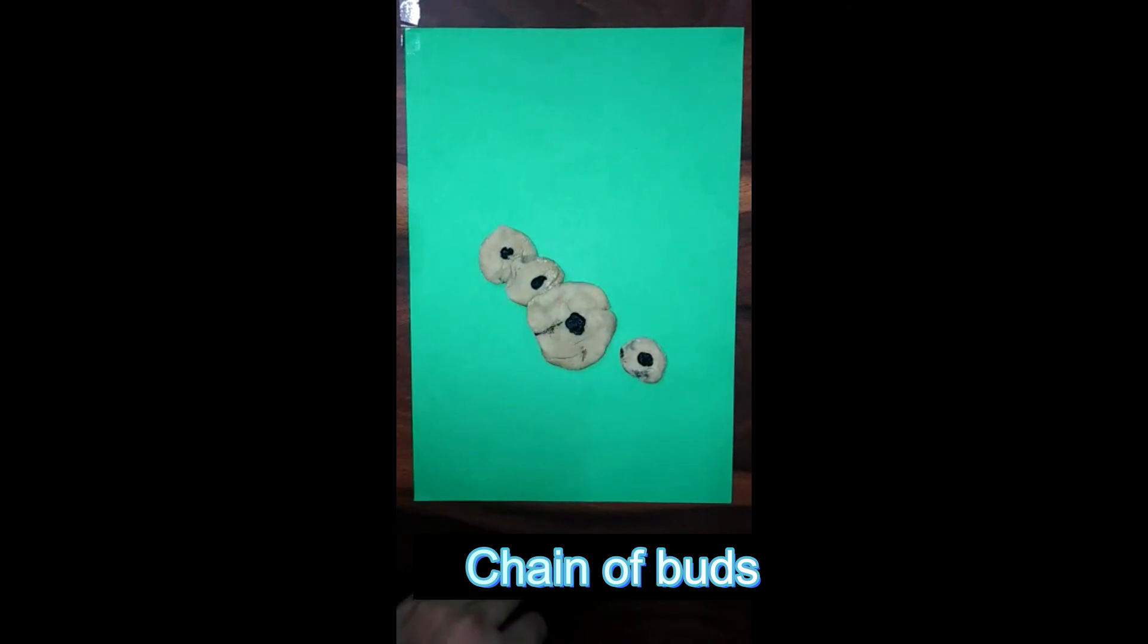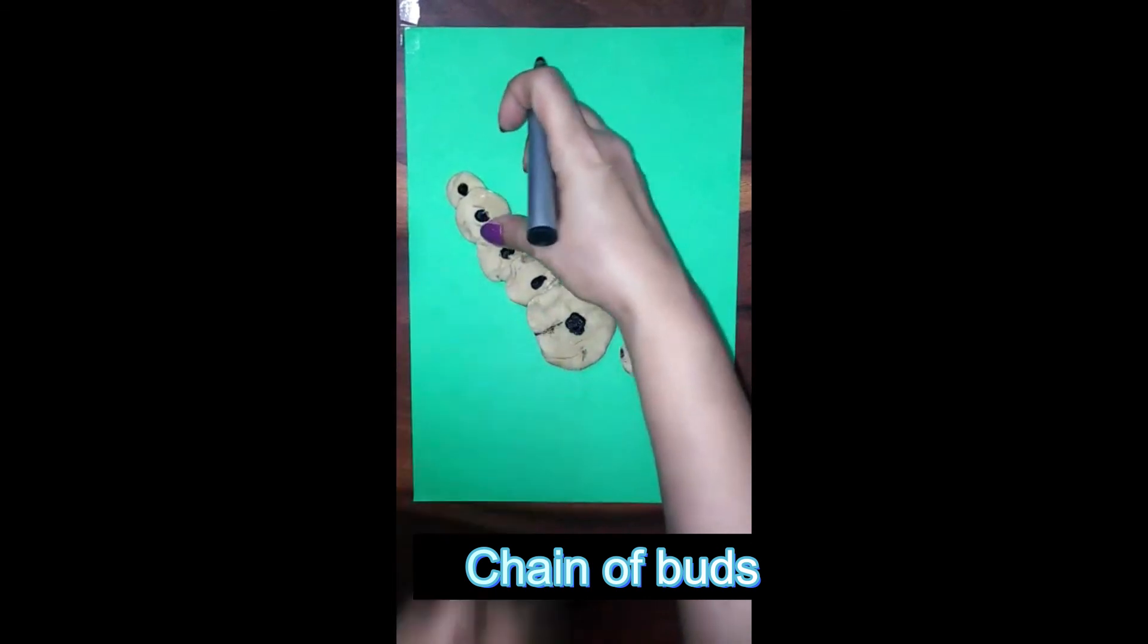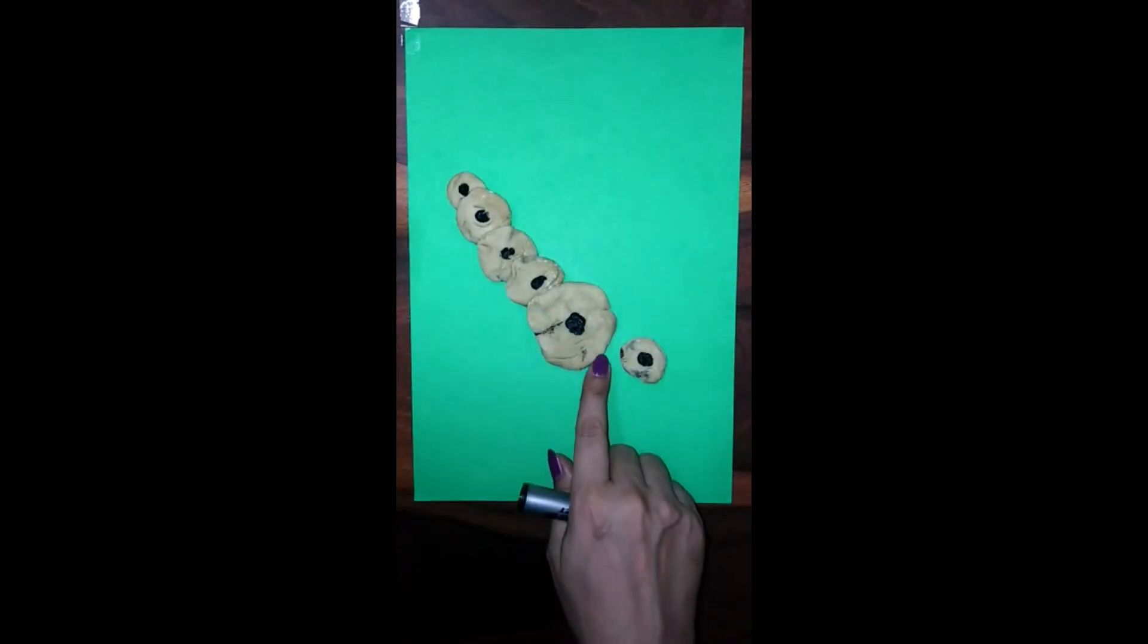So likewise we can have a chain of buds that can be formed in case of yeast. Either the daughter cell will get detached and develop as an individual organism, or there can be a chain of buds formed. Since this is a mode of asexual reproduction in case of yeast and there is formation of bud, this method is called as budding.